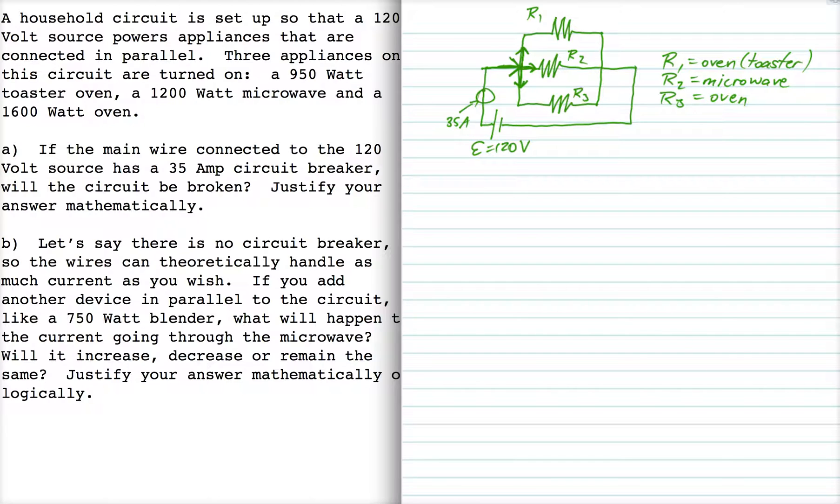So we're told that P1, power for the toaster oven, is 950 watts. We can set that equal to I1 delta V1, that's I1 times 120. All three of these devices have the same voltage drop across them because they're connected in parallel. So that means I1 is 7.92 amps.